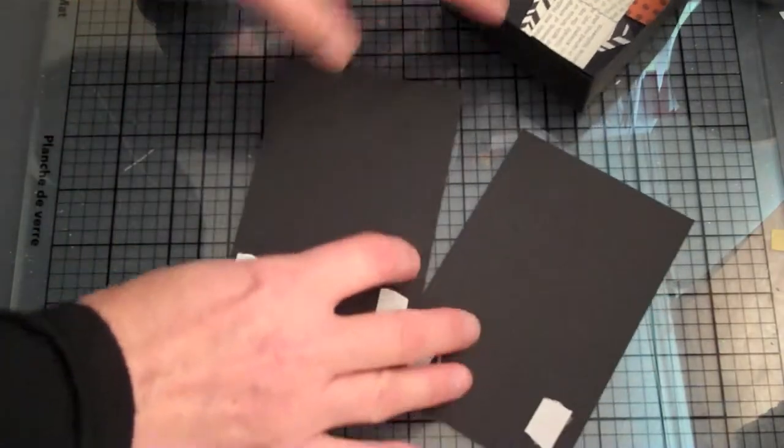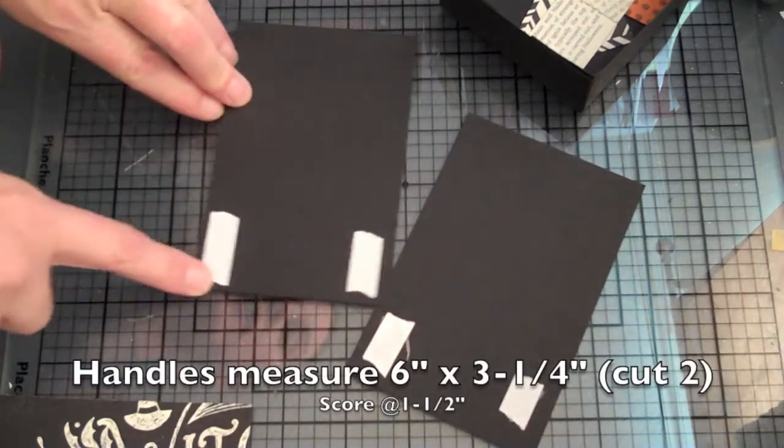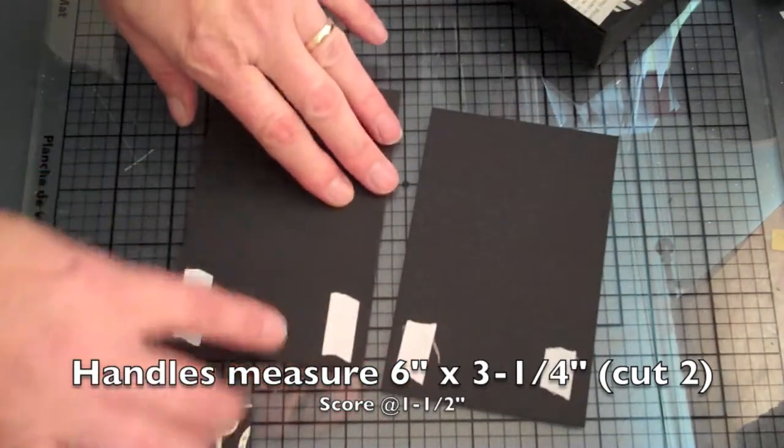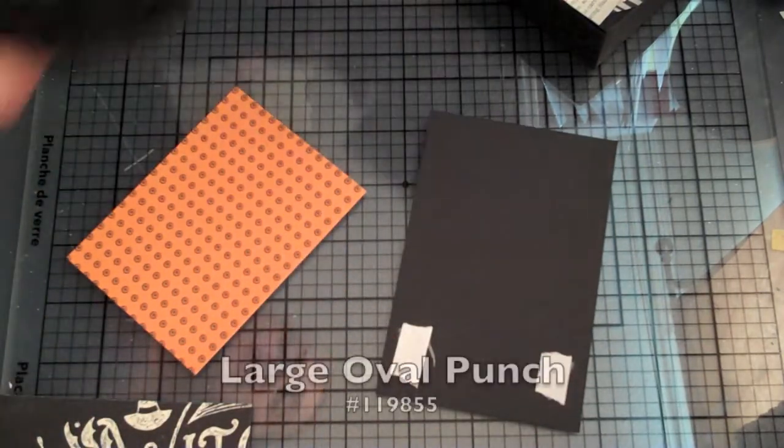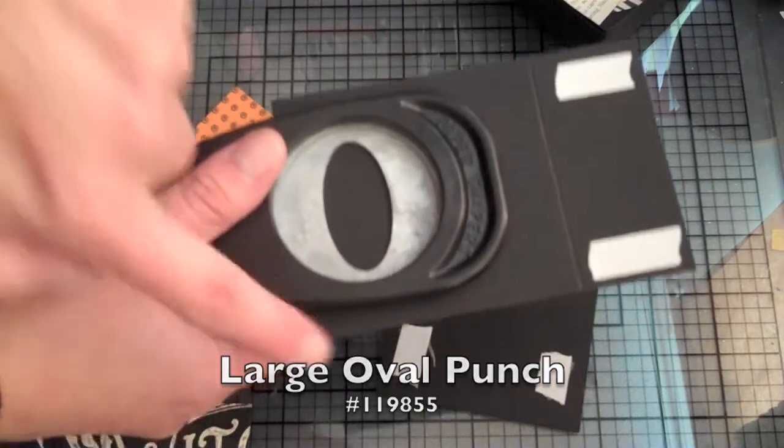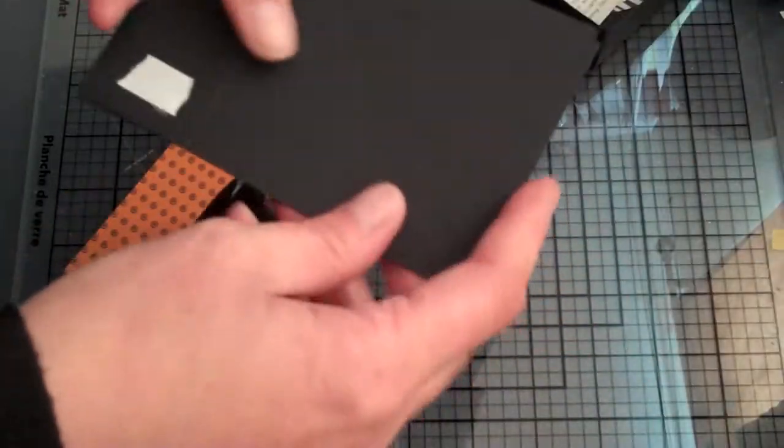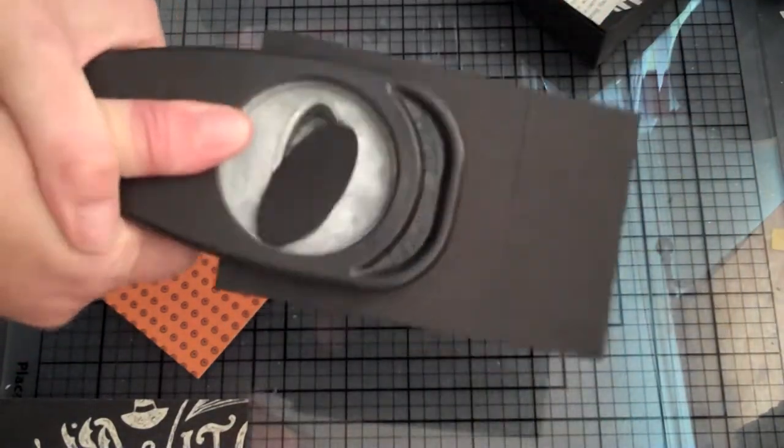These are going to be the handles for the little milk box holder and these measure six by three and a quarter and it's scored at one and a half on both of these so you need two pieces. I've put double sided sticky tape here on the bottom two flaps and before I do anything else I'm going to take my large oval punch and I'm going to just center it between the two sides here and I'm going to punch. I'm going to go ahead and line up the other handles so that they have the same punch.